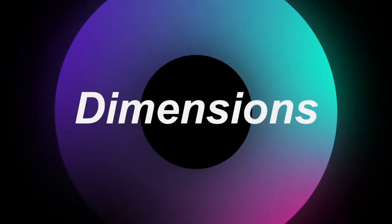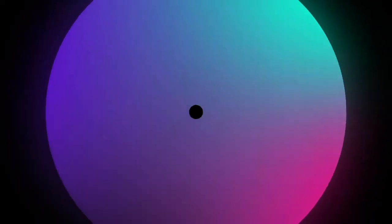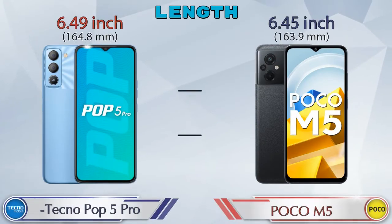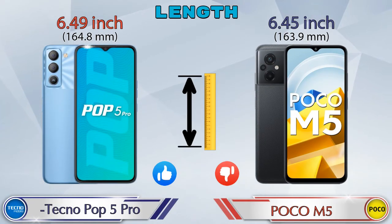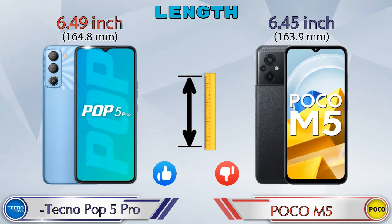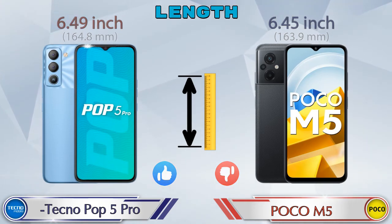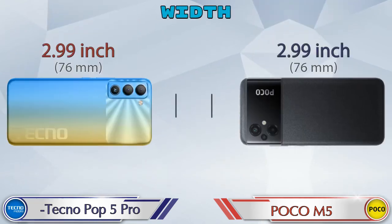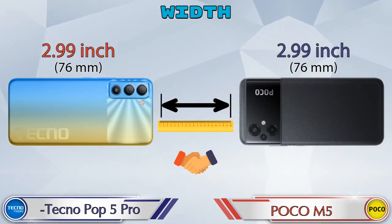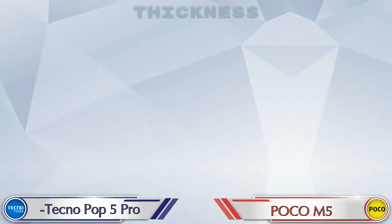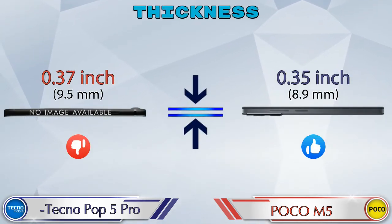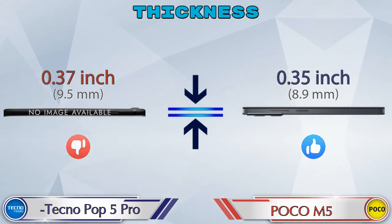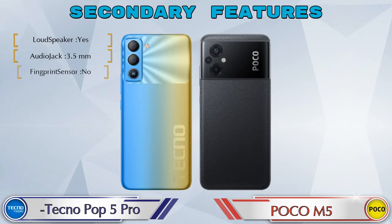Now let's check the dimensions. Length: Pop 5 Pro is 6.49 inches and Poco M5 is 6.45 inches, which is less than the Pop 5 Pro. Width is the same in both phones at 2.99 inches. Thickness: Pop 5 Pro is 0.37 inches and Poco M5 is 0.35 inches.